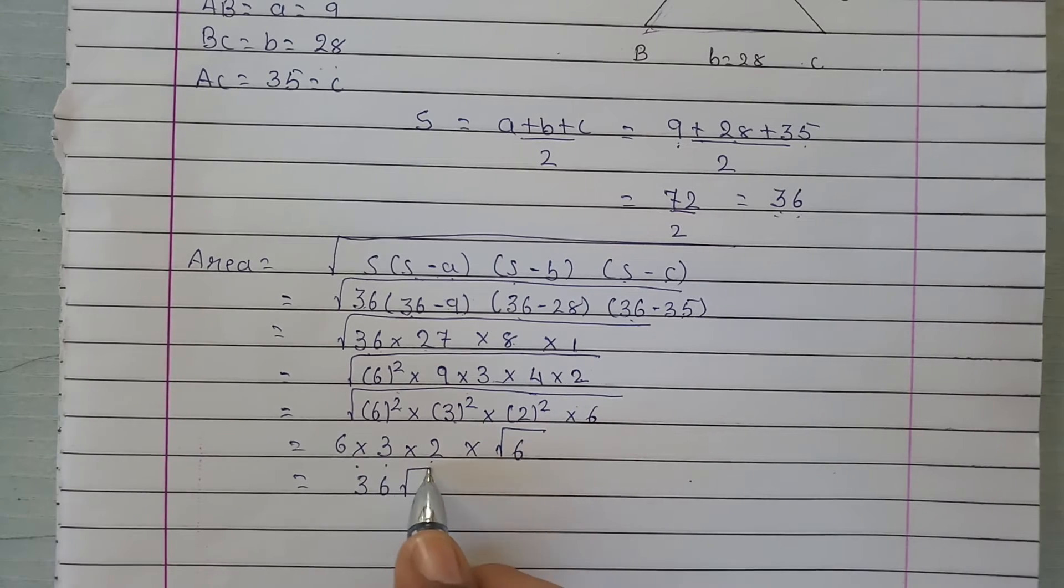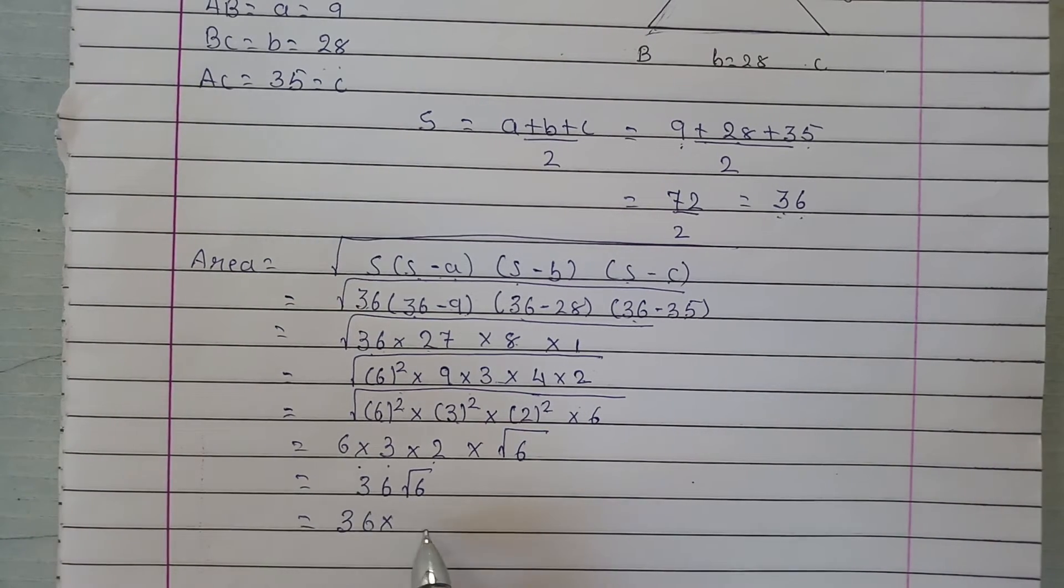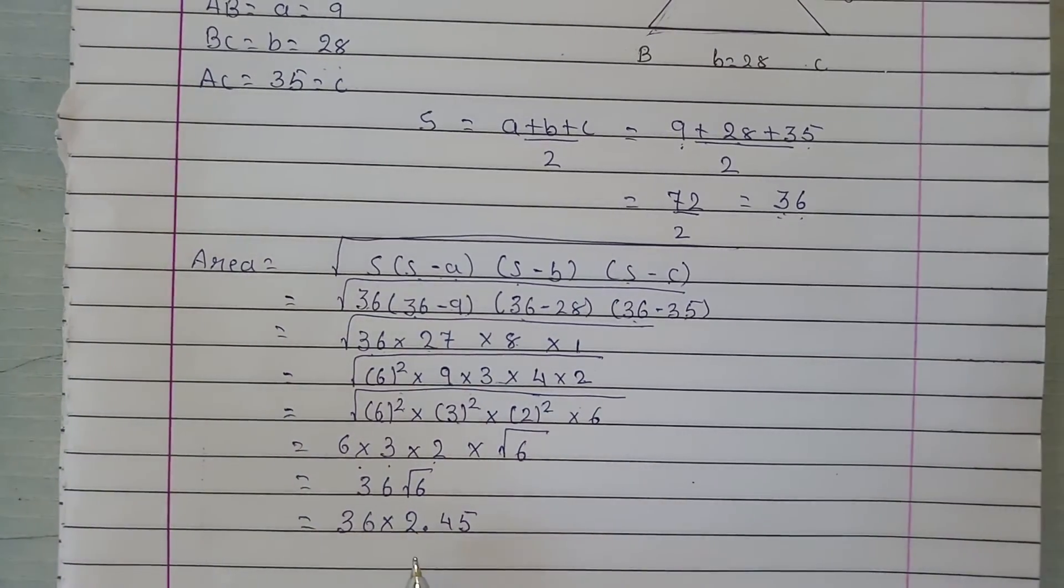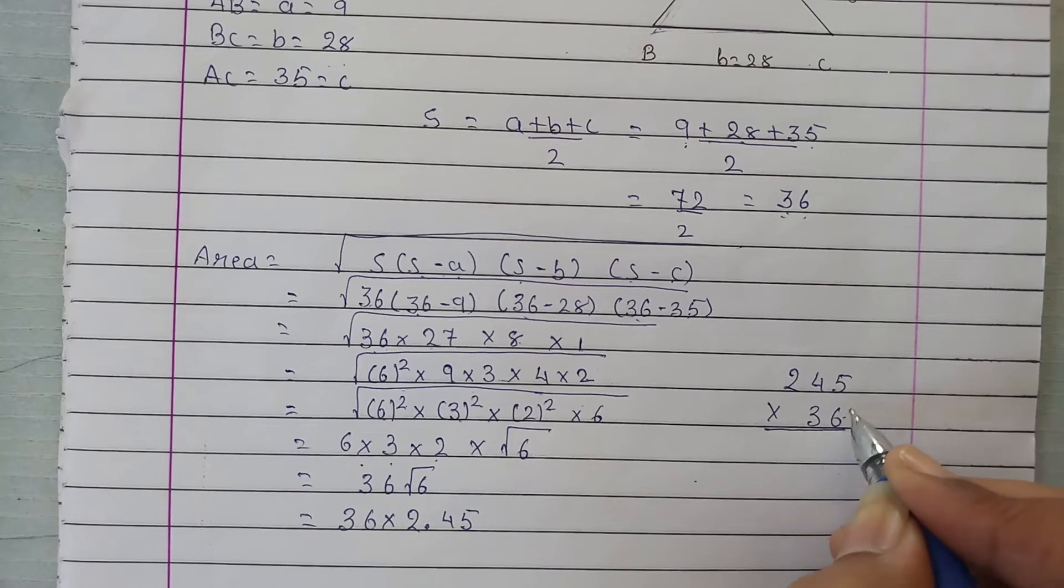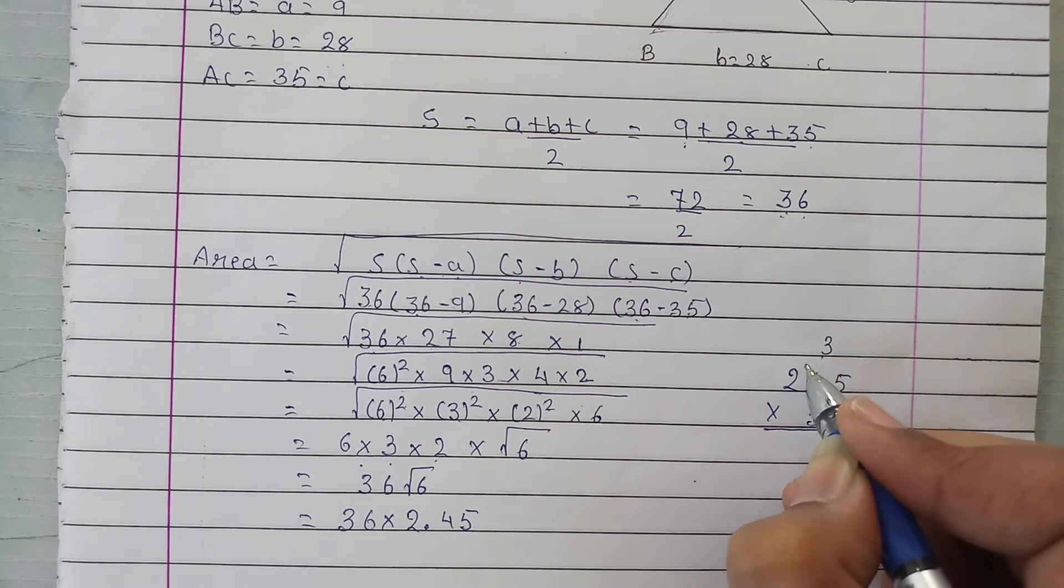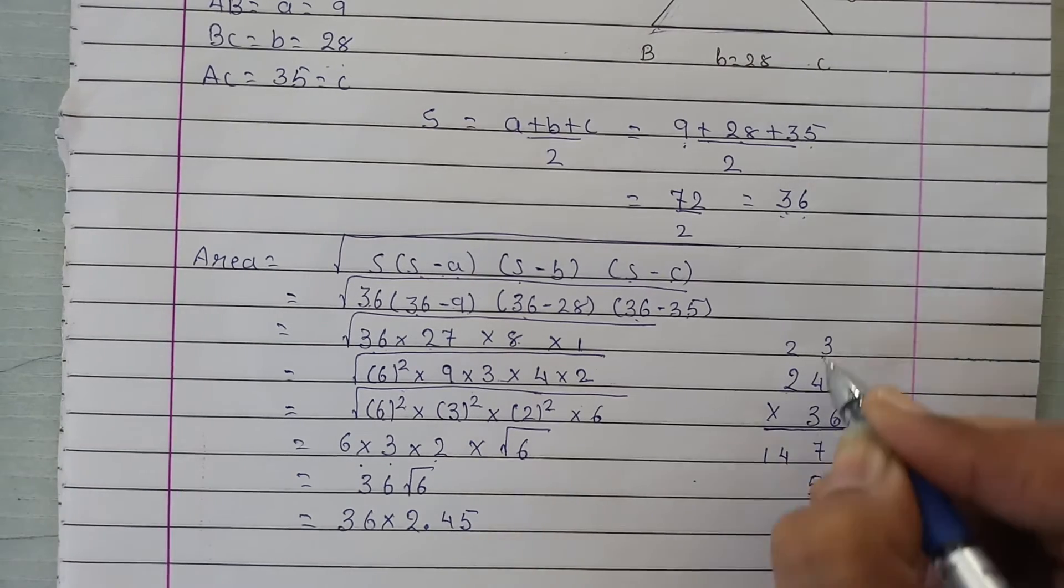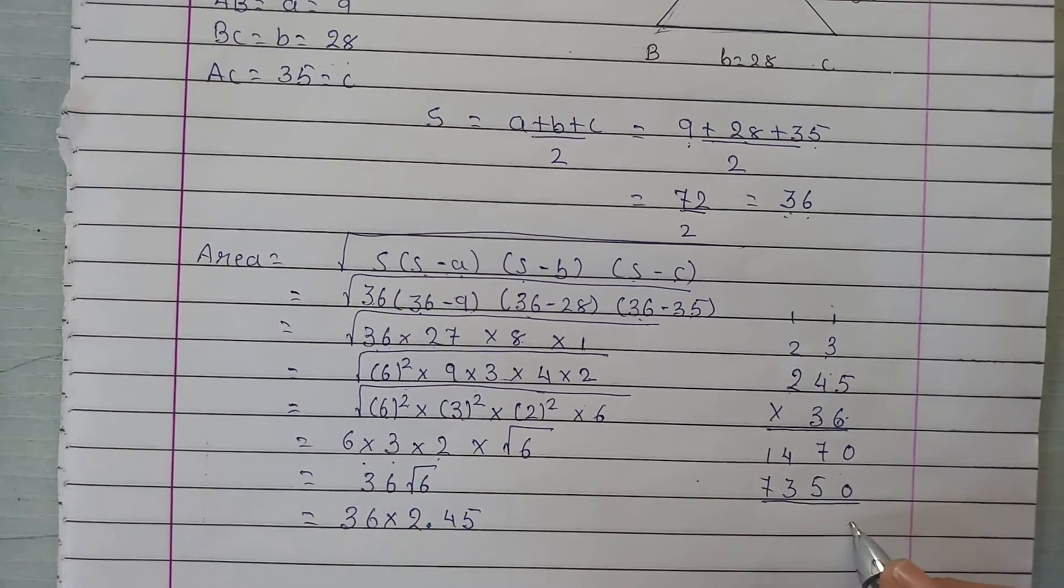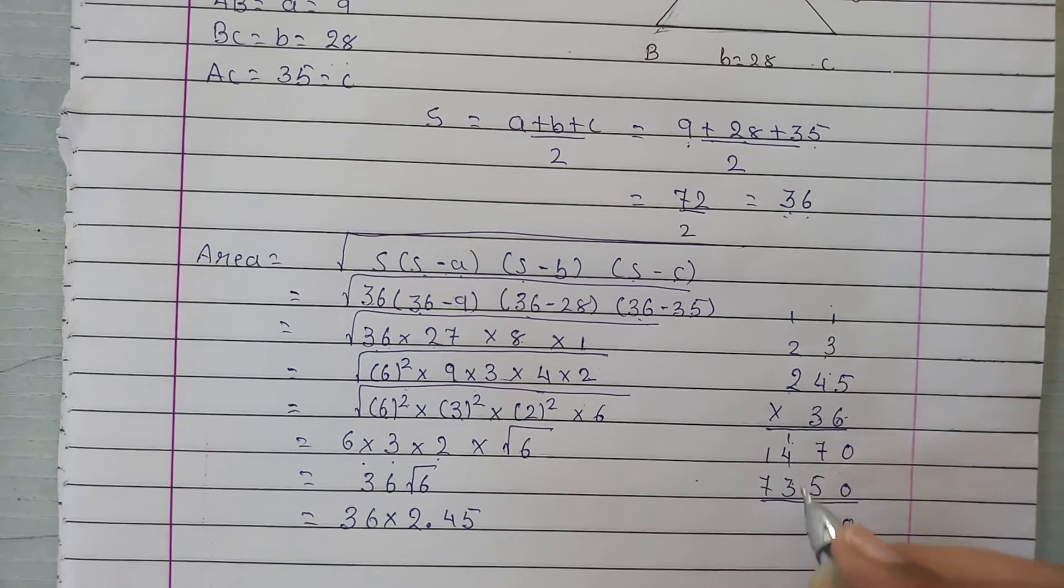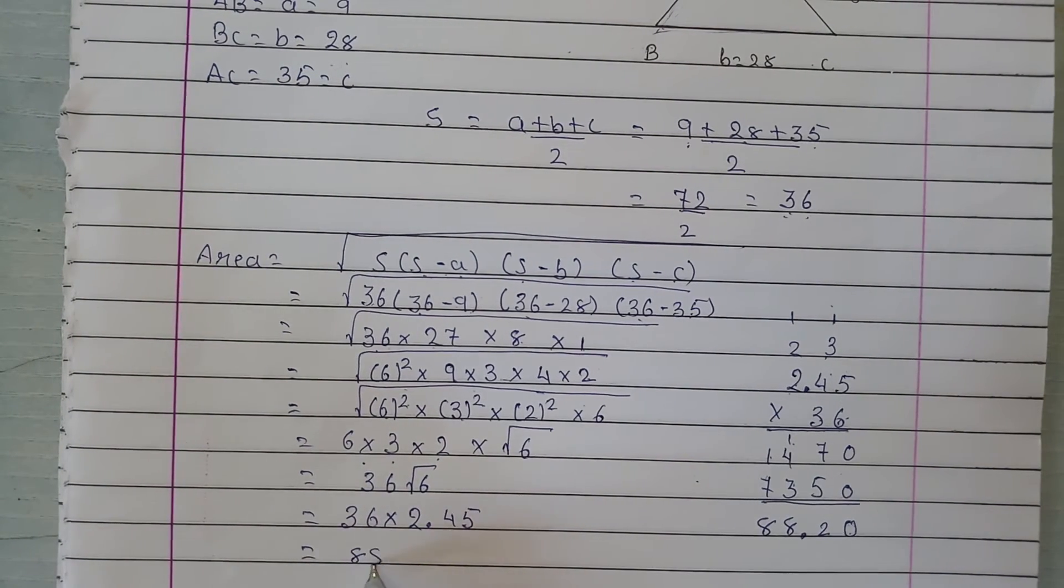Now 36 root 6, the value of root 6 is 2.45, so this is 36 times 2.45. Multiplying 2.45 by 36: 6 times 5 is 30, 6 times 4 is 24 plus 3 equals 27, 6 times 2 is 12 plus 2 equals 14. Then 3 times 5 is 15, 3 times 4 is 12 plus 1 equals 13, 3 times 2 is 6 plus 1 equals 7. Adding these: 88.2 cm squared.